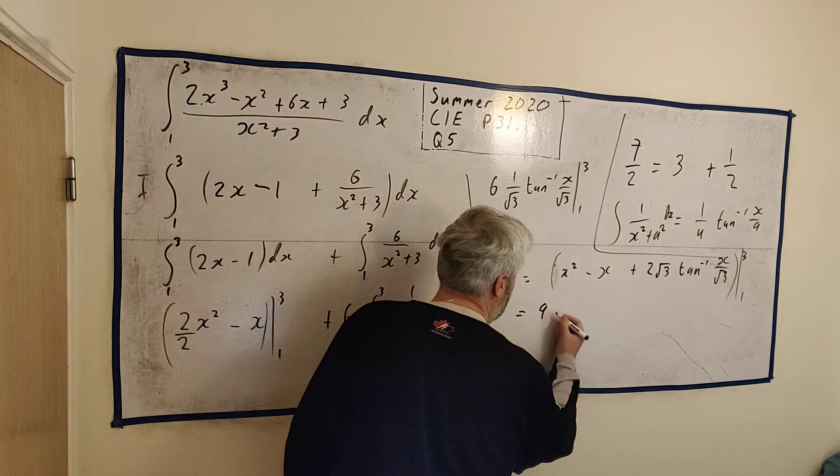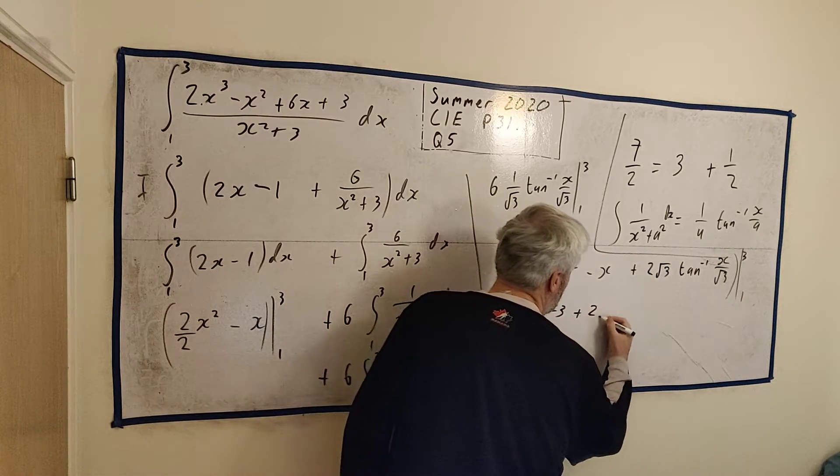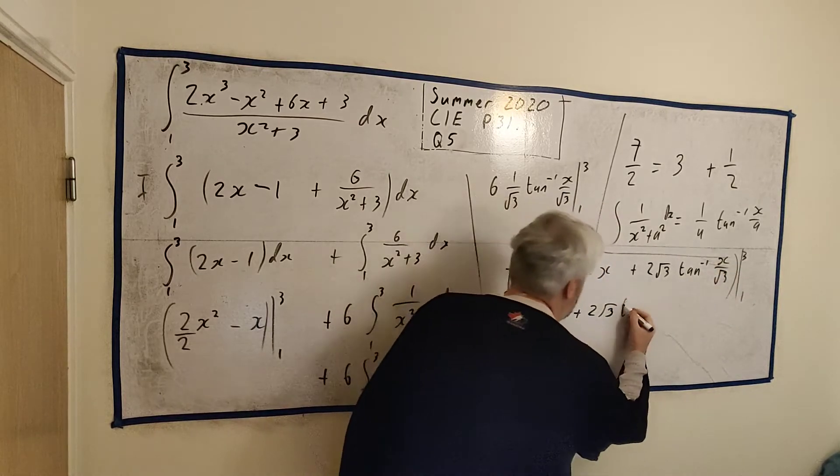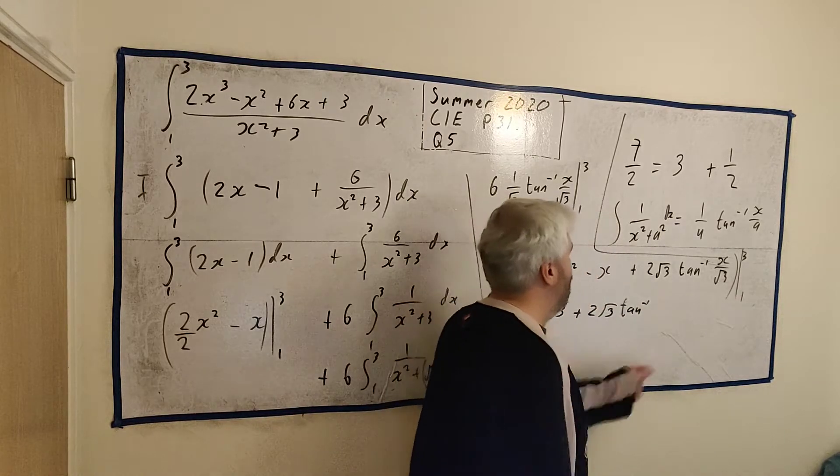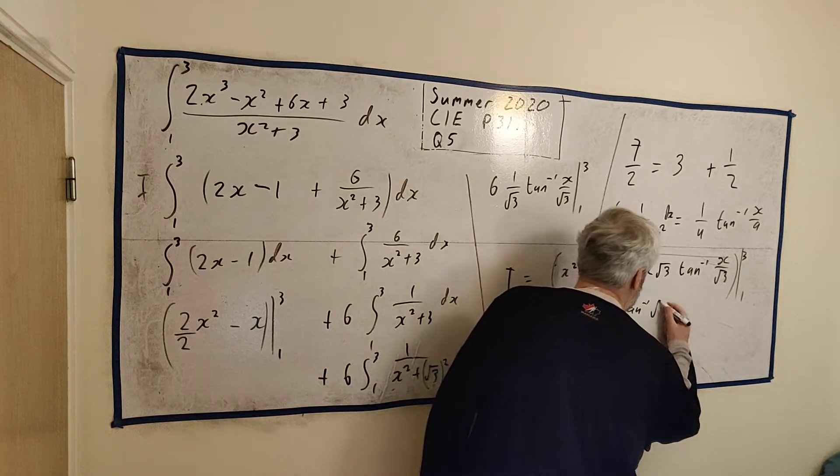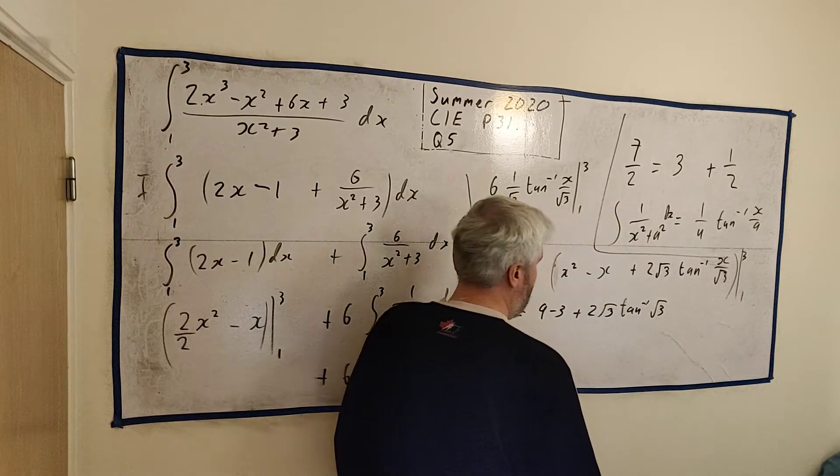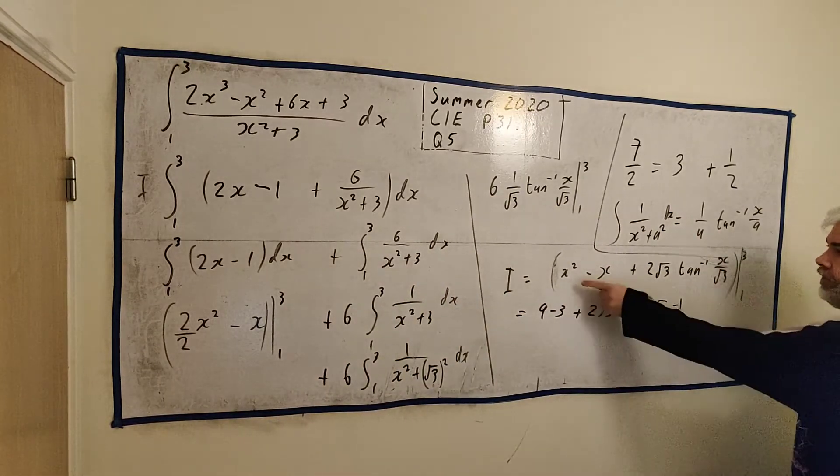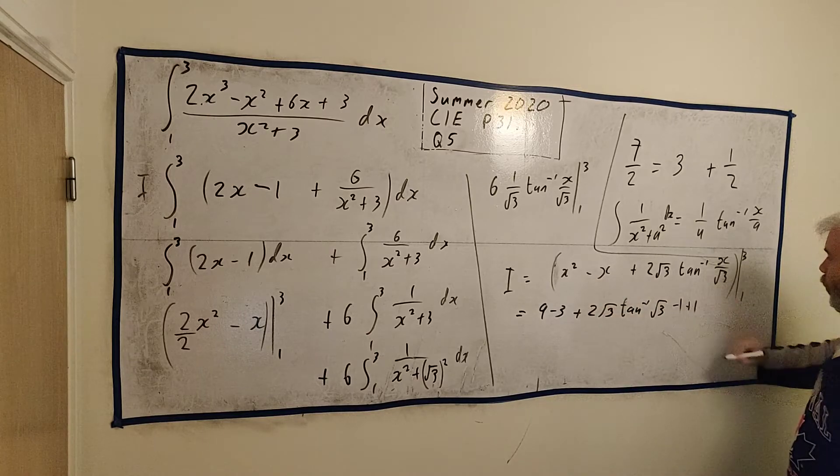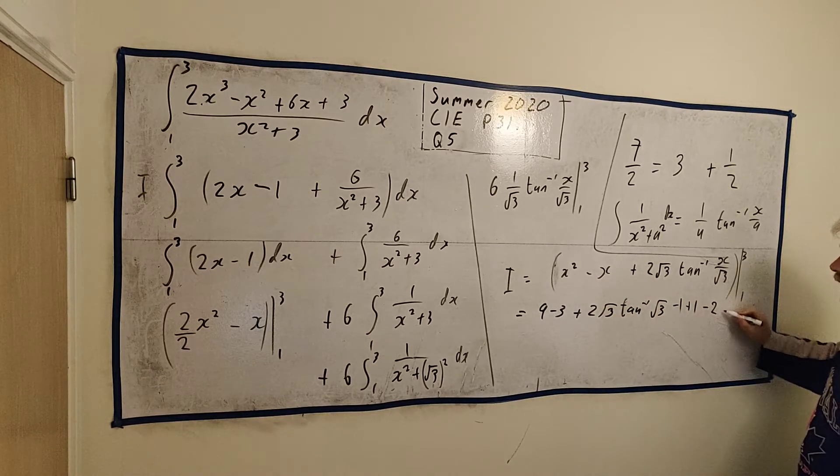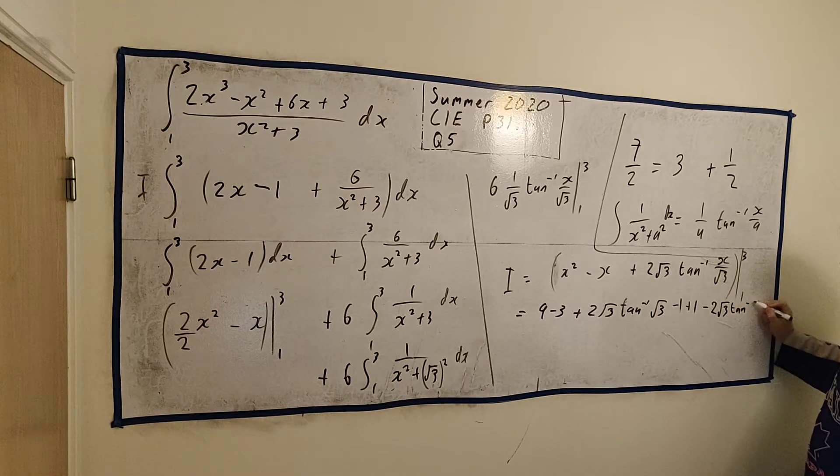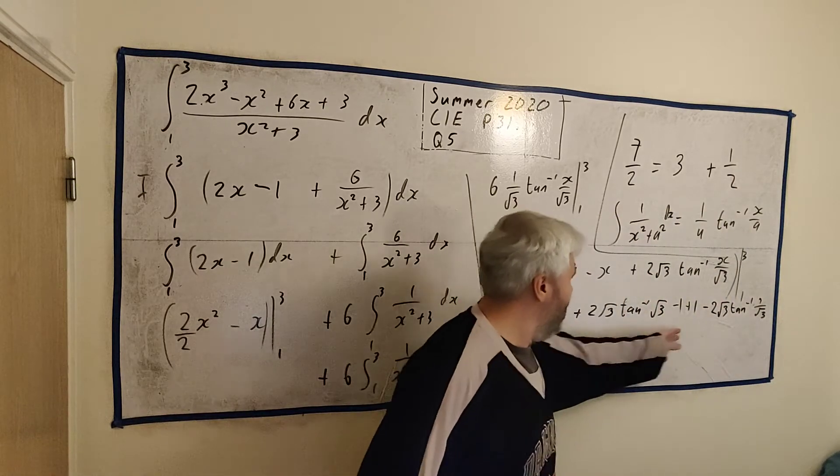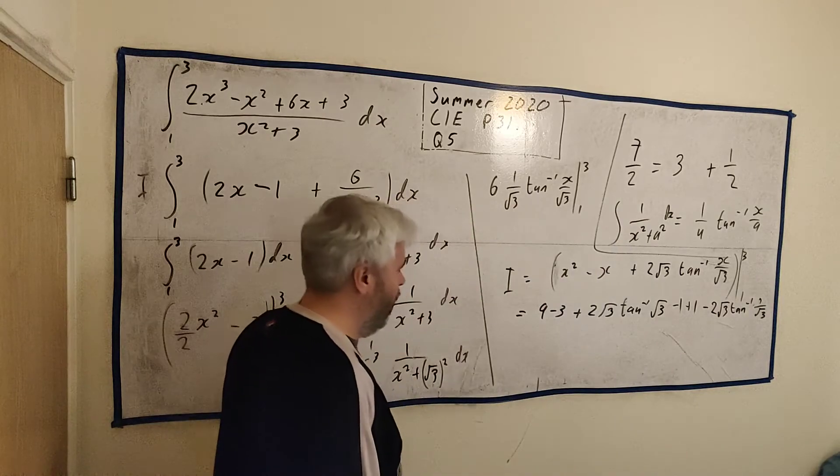Put 3 in, I'll get 9 minus 3 plus 2 over square root of 3, inverse tangent of 3 divided by square root of 3 is square root of 3. And then we'll take away when I put 1 in. So I take away 1 squared minus minus another 1, and then minus 2 times the square root of 3, the inverse tangent of 1 over square root of 3.